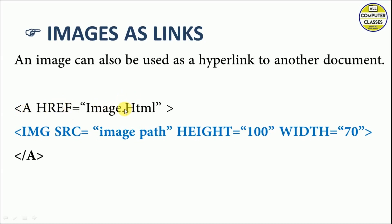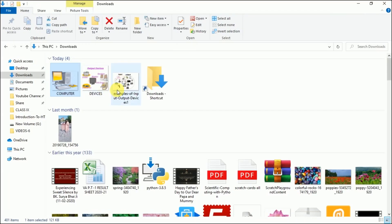The syntax is: the anchor tag with href set to the link you want to create, then the opening anchor tag closes. Then the image tag starts with the source attribute pointing to the path of the image that will appear on the web page, along with height and width attributes, then we close the image tag, and finally we put a closing anchor tag.